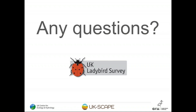A question about counting spots: when you count the spots on a ladybird, do you include the spots on the pronotum or just the ones on the wing cases? Just include the ones on the two wing cases. It's a really good question because, for example, the 22-spot ladybird has lots of other little spots on the pronotum, but you're counting just those on the wing cases.